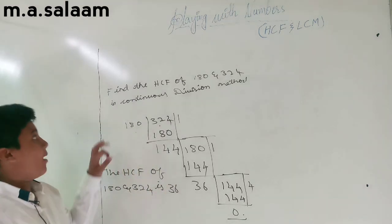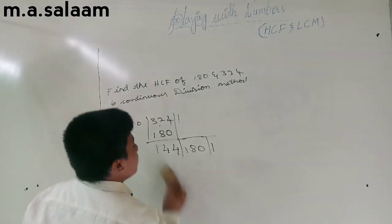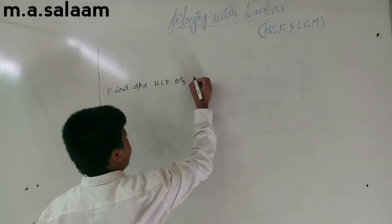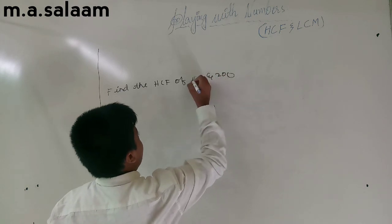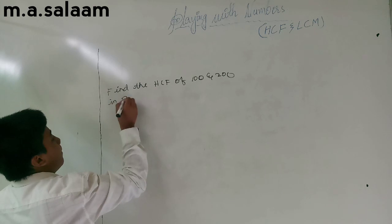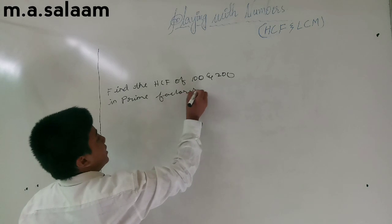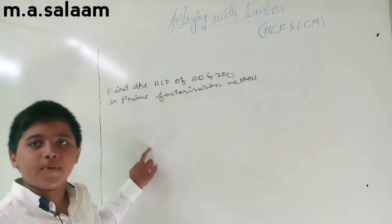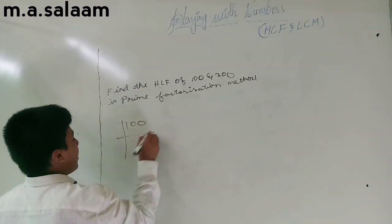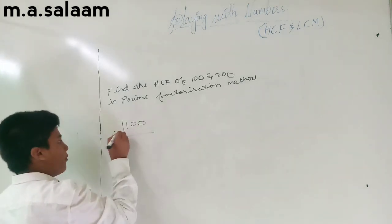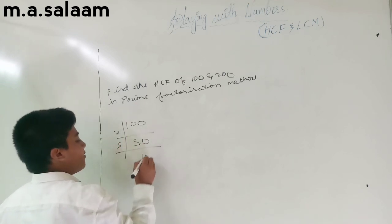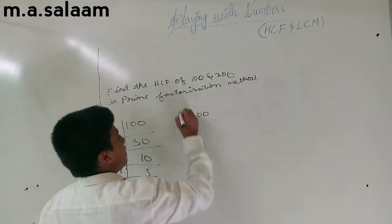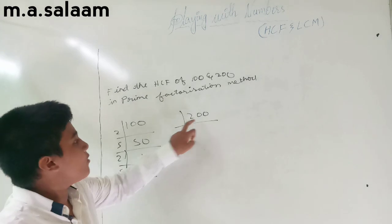Now let's discuss the second method. If your question is: find the HCF of 100 and 200 using the prime factorization method, then write 100, draw a line, and find the lowest number that can divide 100 and 200. That number is 2.